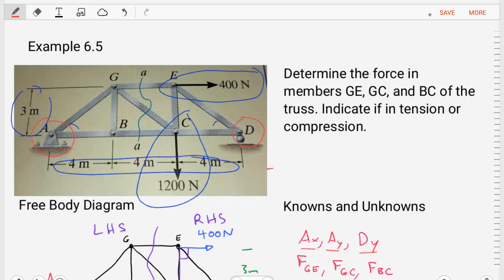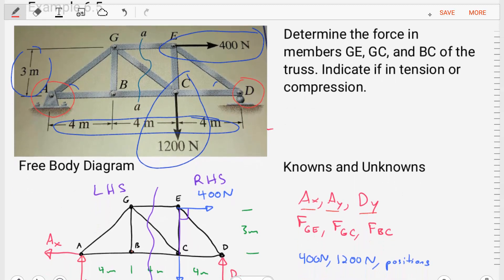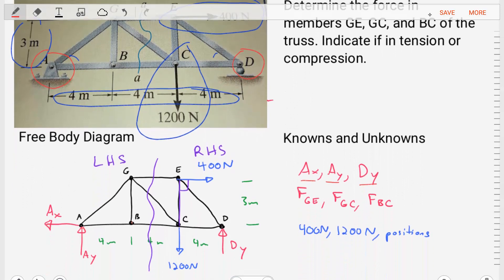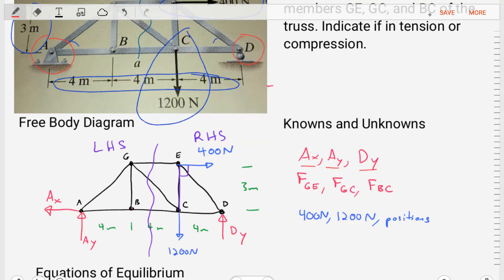Now let's go ahead and take that truss and create a free body diagram where we free the body from its constraints and replace those constraints at A and D with the reactions AX, AY, and DY.